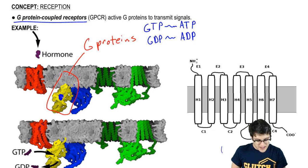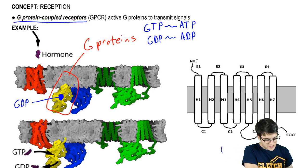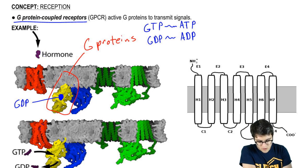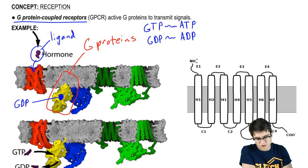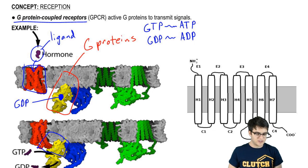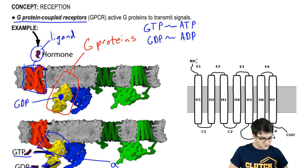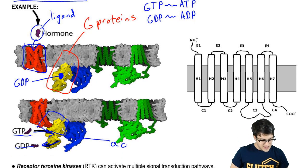This G-protein here actually has GDP in it. What's going to happen is some hormone, or any ligand really — any ligand can be a hormone — is going to bind to this G-protein-coupled receptor right here. That's going to change the shape of the receptor so that it can interact with the G-protein. This inactive G-protein is going to interact with the receptor and swap GTP for the GDP it had, and this is going to activate it. This activates the G-protein.